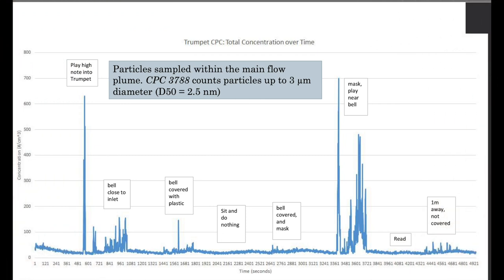This chart shows the total concentration over time for the trumpet, which is the highest pitch brass instrument that we have. If you look at the left-hand side of this chart you can see that big spike where the trumpet is playing in its higher register, and the concentration of the particles is very high. You can see that in comparison to sitting and doing nothing, compared to the mask covering the bell and so forth. When a brass player or musician sings in the higher register, there is a higher concentration of aerosol particles coming out, and that plume is going to also be bigger and could cause some problems.